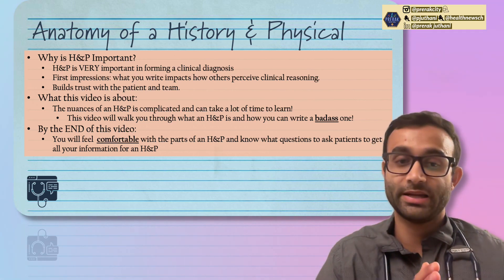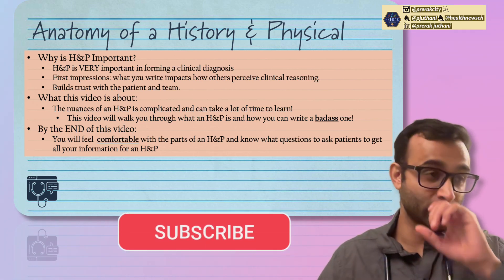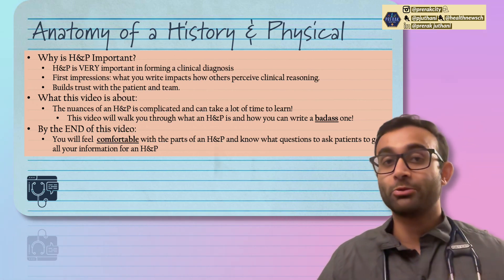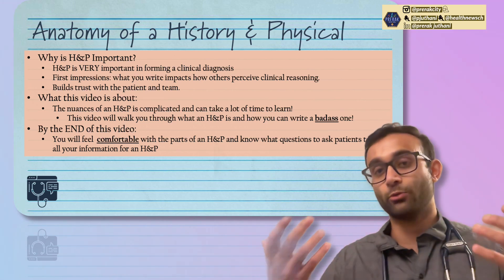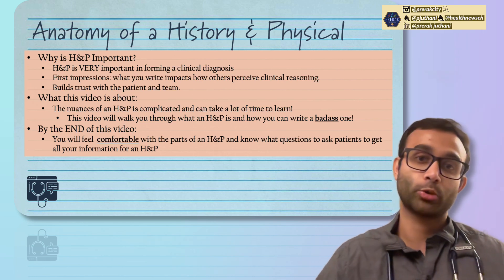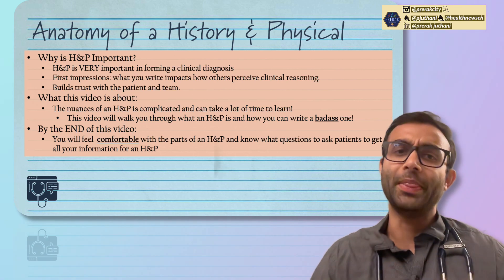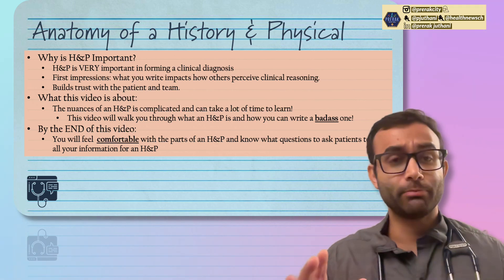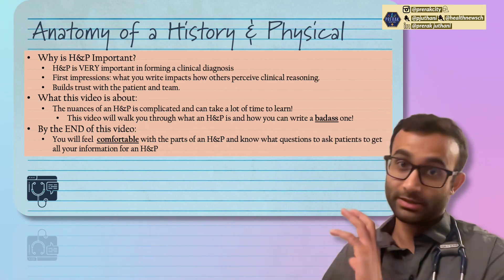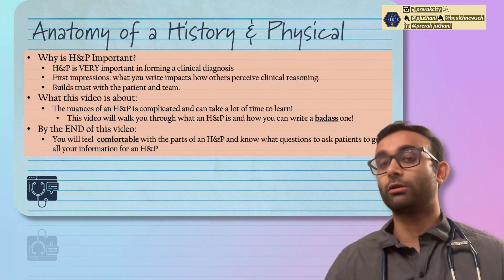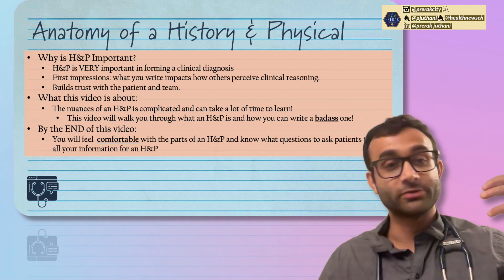The reason why this is important is that when you write a history and physical, you're not just telling me your thoughts — you're also telling others what you think is going on. If someone's coming in with shortness of breath, your history and physical and the way you present the patient has a big influence in the way I perceive the patient. So if you're telling me they have a cardiac history, crushing substernal chest pain, and an elevated troponin, you're painting a much more likely picture of ACS as opposed to a pulmonary embolus.